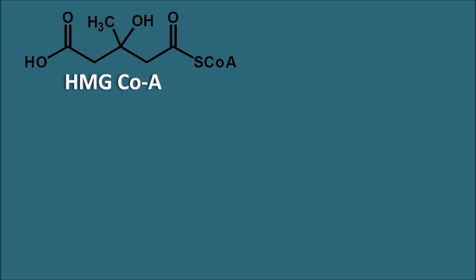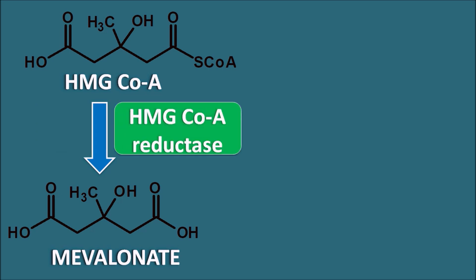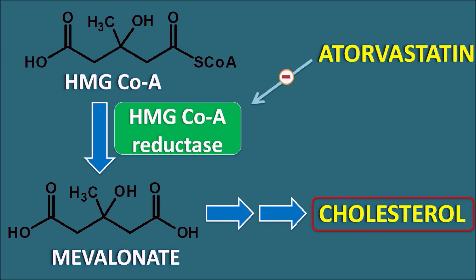An important step in cholesterol biosynthesis within the liver is the conversion of HMG-CoA into mevalonate, mediated by the enzyme HMG-CoA reductase. This mevalonate is then converted into cholesterol through several steps. This conversion of HMG-CoA to mevalonate is the rate-determining step controlling cholesterol biosynthesis. By inhibiting HMG-CoA reductase, atorvastatin inhibits cholesterol biosynthesis in the liver, resulting in increased uptake of LDL from the blood into the liver, thereby reducing blood LDL cholesterol levels.